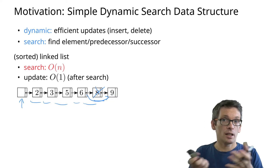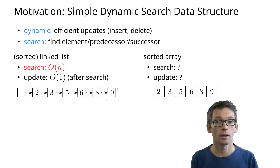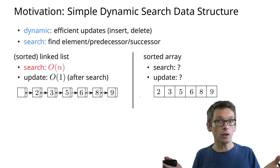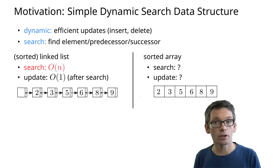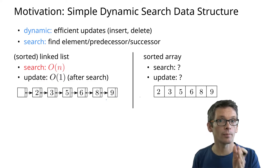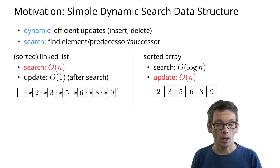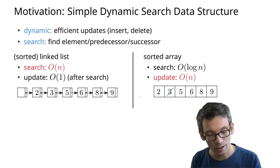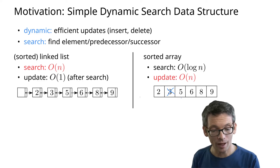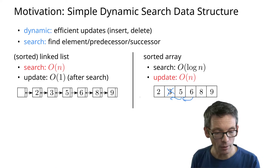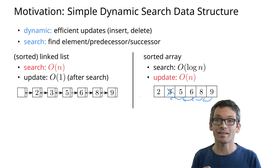So what's a simple alternative? A simple alternative would be a sorted array. So can we search and update efficiently in a sorted array? Not quite. We can search efficiently because we can do a binary search, but updating takes linear time. For instance, if I want to delete the 3, I can quickly find it using binary search, but then to update my array I have to shift all of those elements over by one and that takes linear time.